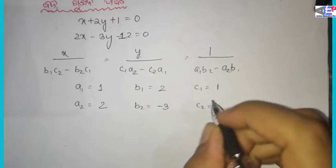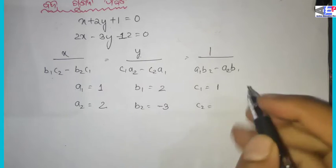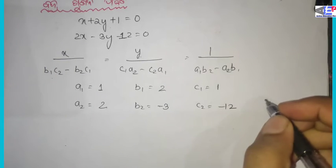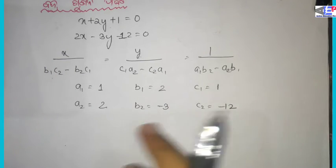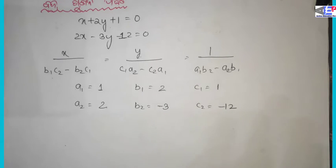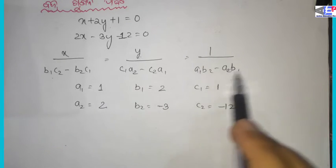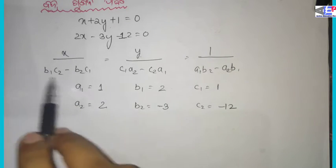So, c2 is equal to minus 12, and c1 is also minus 12. We have our coefficients: a1, b1, c1 and a2, b2, c2. We will now apply the formula in the first step.